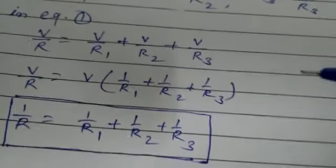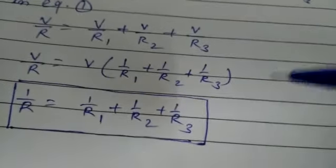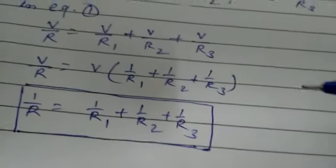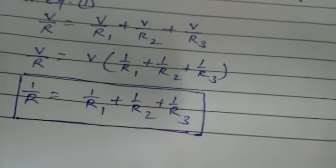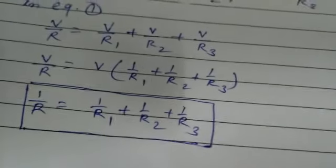So in this situation we may conclude that the reciprocal of the equivalent resistance of a group of resistances joined in parallel is equal to the sum of the reciprocals of the individual resistance.